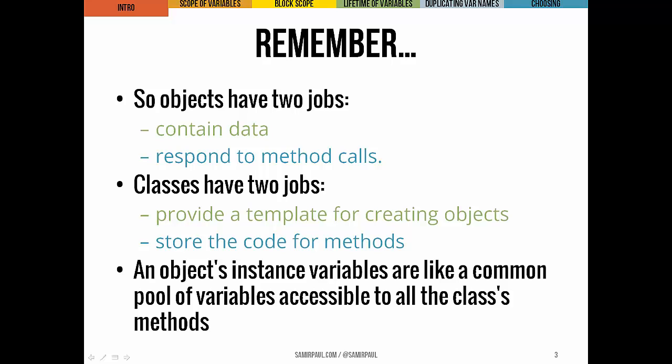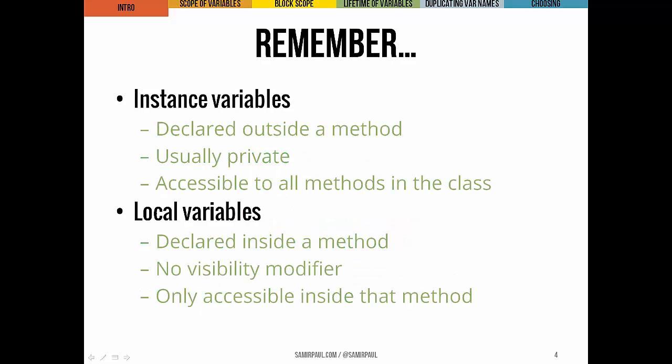When we send a message to an object and call a method, that method has access to any of the instance variables for that object. It's helpful to split variables into two categories: instance variables, which are declared outside a method, usually made private, and accessible by any method in the class; and local variables, which are declared inside a method, have no visibility modifier, and can only be accessed inside that method.